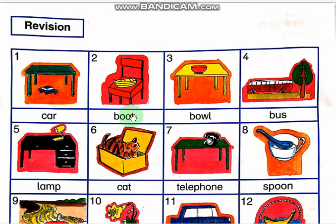Next, a board. What is this? It is a board. What color is it? It is yellow. It is a yellow board. Where is the yellow board? It is on the red chair.